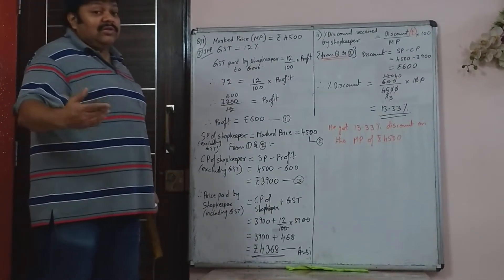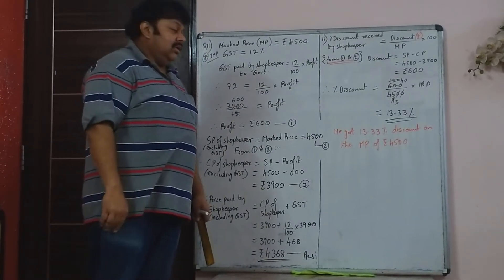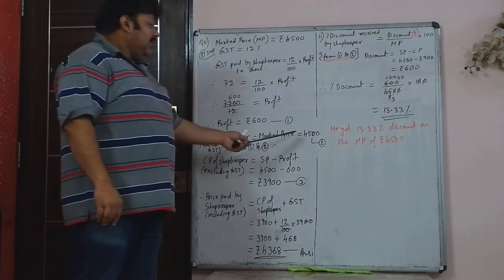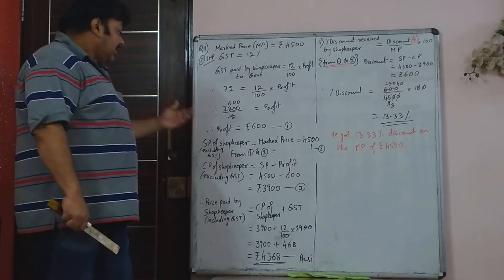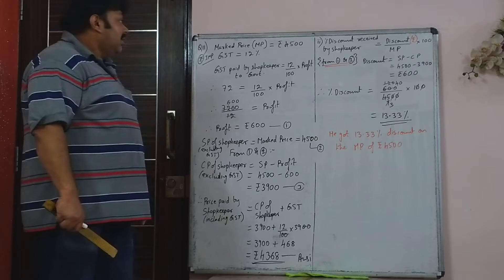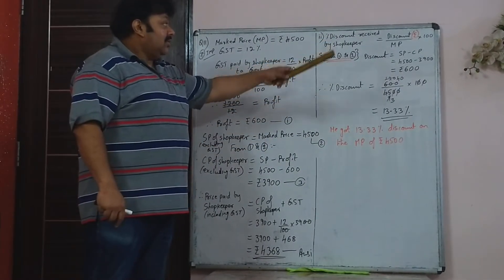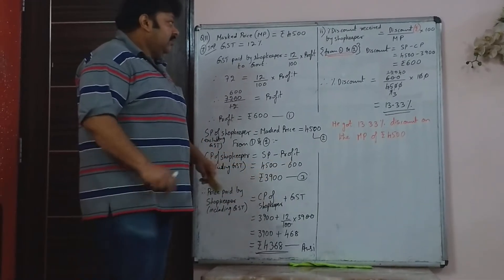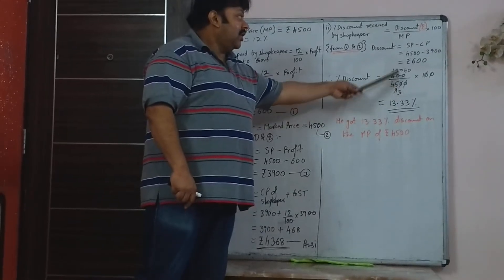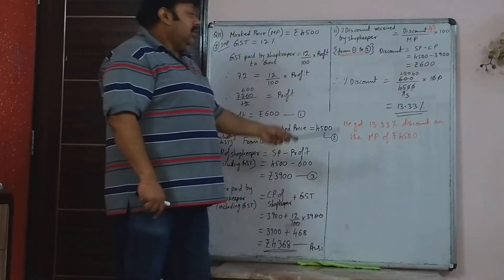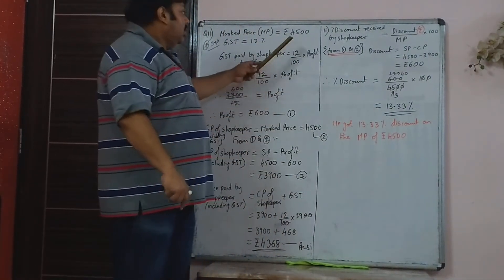The second part asks: how much discount did the shopkeeper get? The shopkeeper bought it from the distributor. SP was the mark price Rs. 4,500 and CP was Rs. 3,900, so the discount the shopkeeper got was Rs. 600. That discount is on the mark price, so Rs. 600 upon Rs. 4,500 into 100 gives 13.33% — that is the percentage discount the shopkeeper got from the distributor on the mark price.